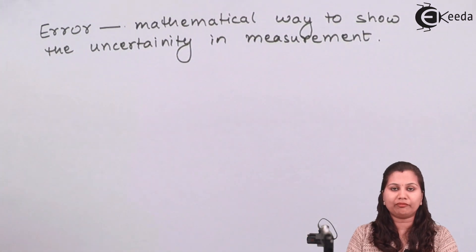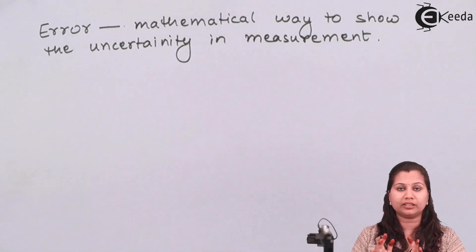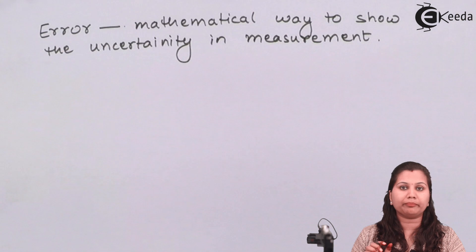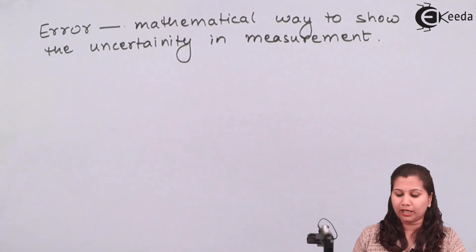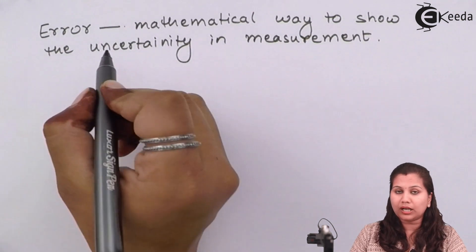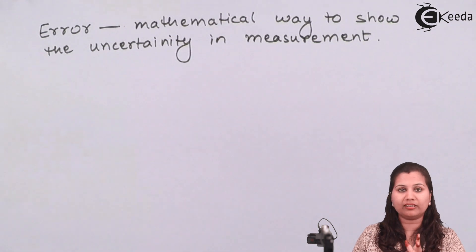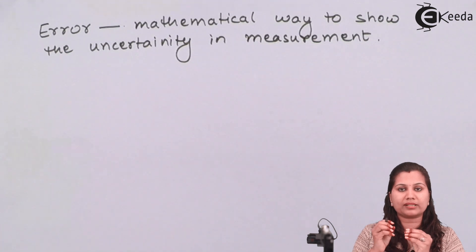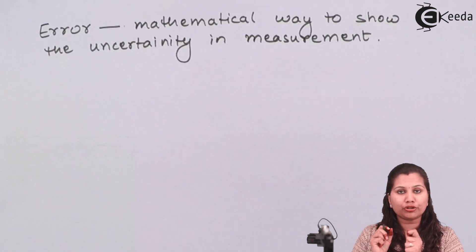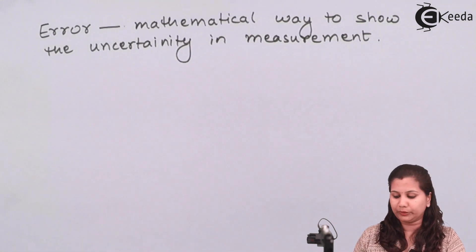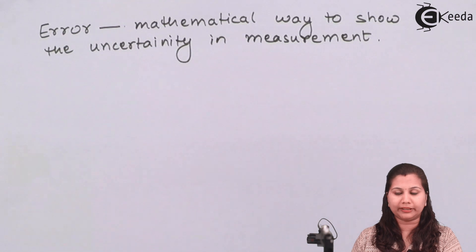Uncertainty means that we are not sure, we are not confirmed that this is the actual value of the measuring quantity. Uncertainty means we are approximate — error is like giving an approximate value that this can be the value, but we are not sure that this is the actual value of that unknown quantity.